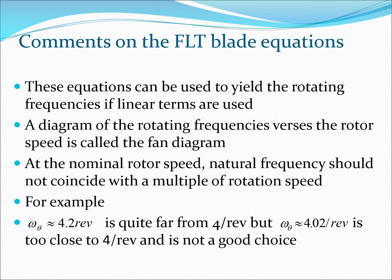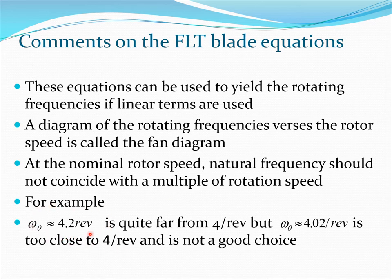These equations can be used to yield rotating frequencies if you only use linear terms, and a diagram of rotating frequency versus rotor speed can be obtained — this is known as the fan diagram, sometimes also called the Campbell diagram. At the nominal rotor speed, the natural frequency should not coincide with a multiple of the rotation speed. For example, if your first torsion frequency is 4.2 per rev, that's generally much better than 4.02 per rev, which gets too close to 4 per rev.